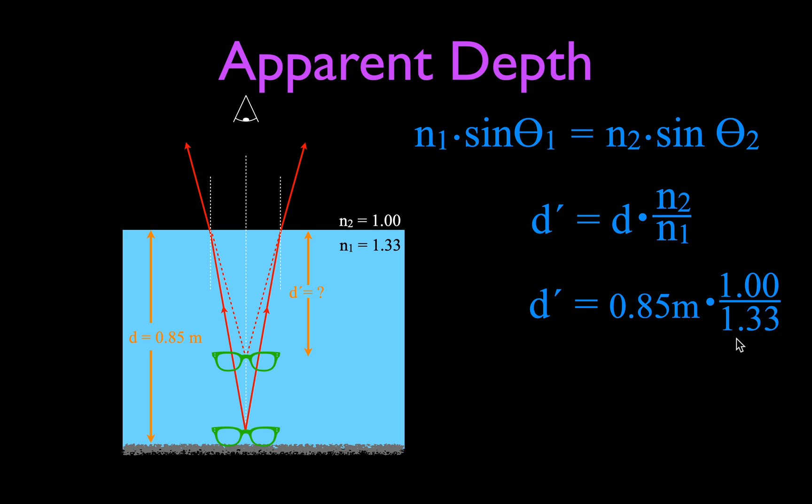The result is that the glasses appear to be at a depth of 0.64 meters — but they're not really there. That is a virtual image, and that is how we calculate the apparent depth.